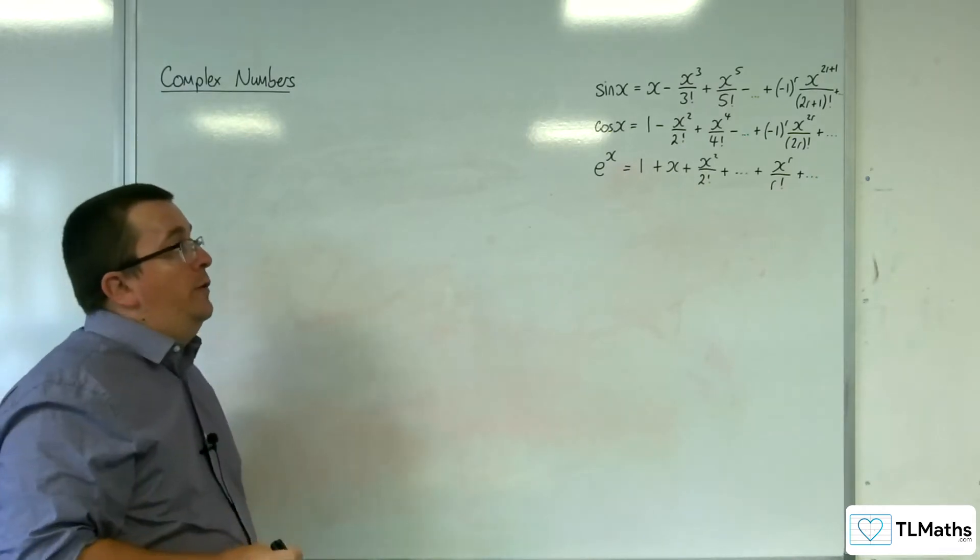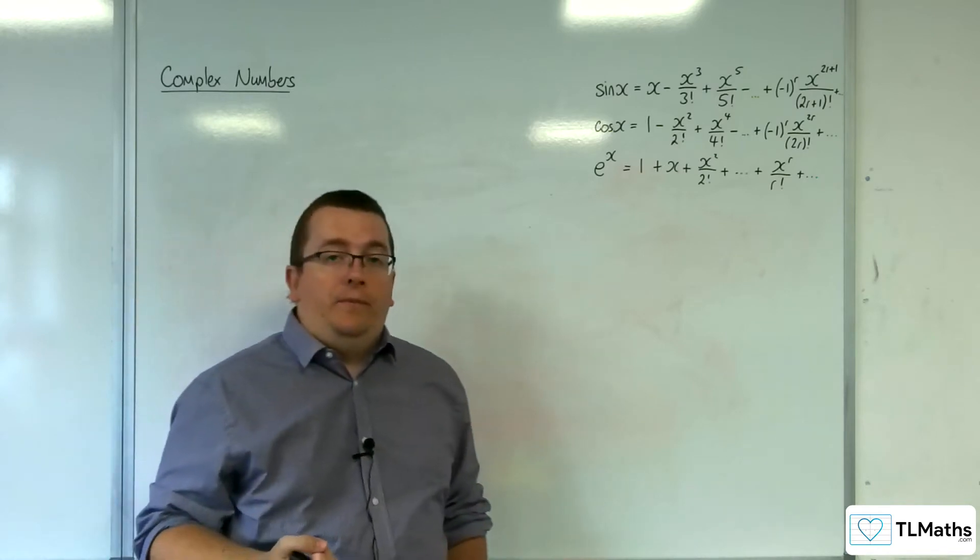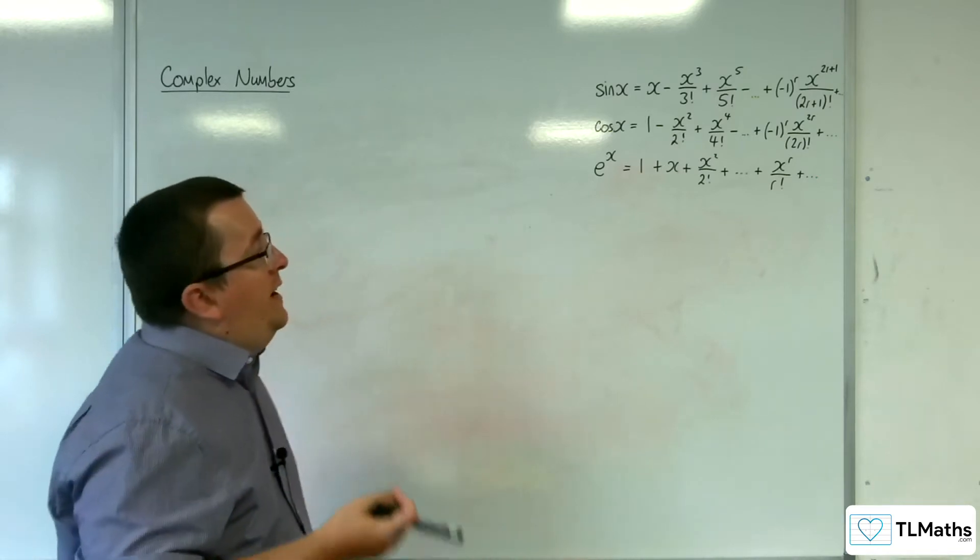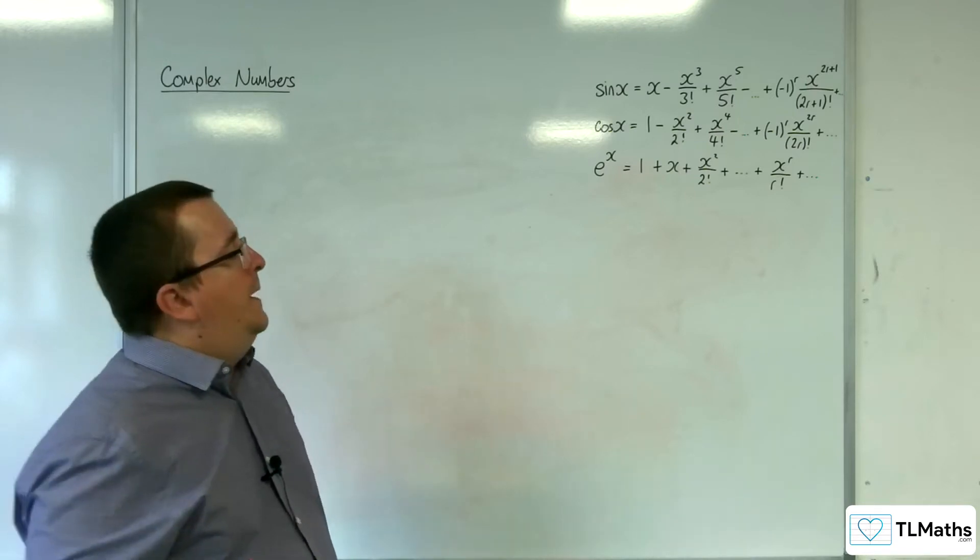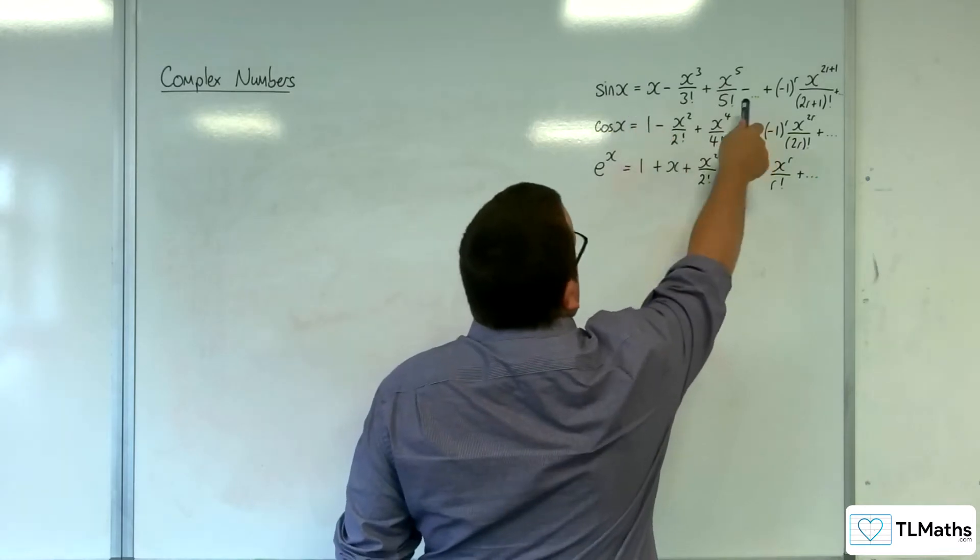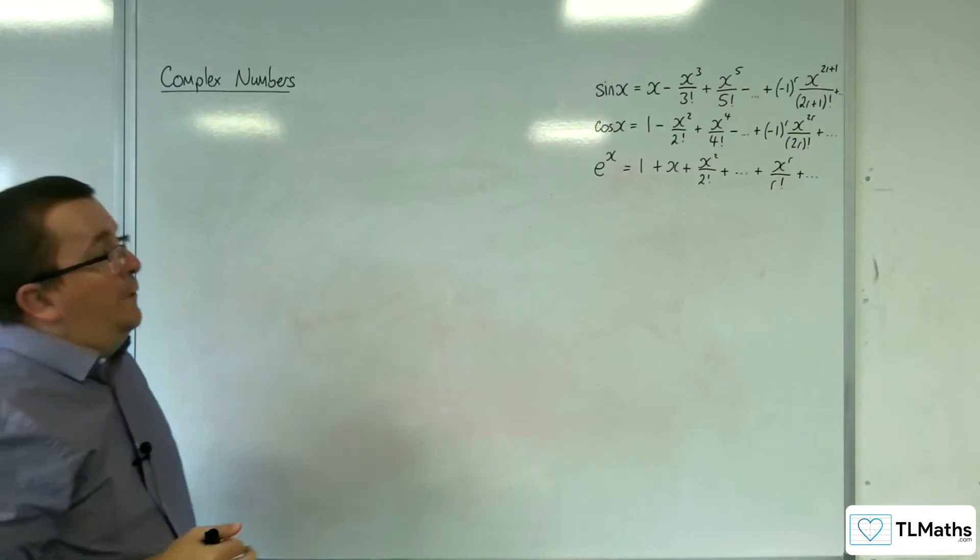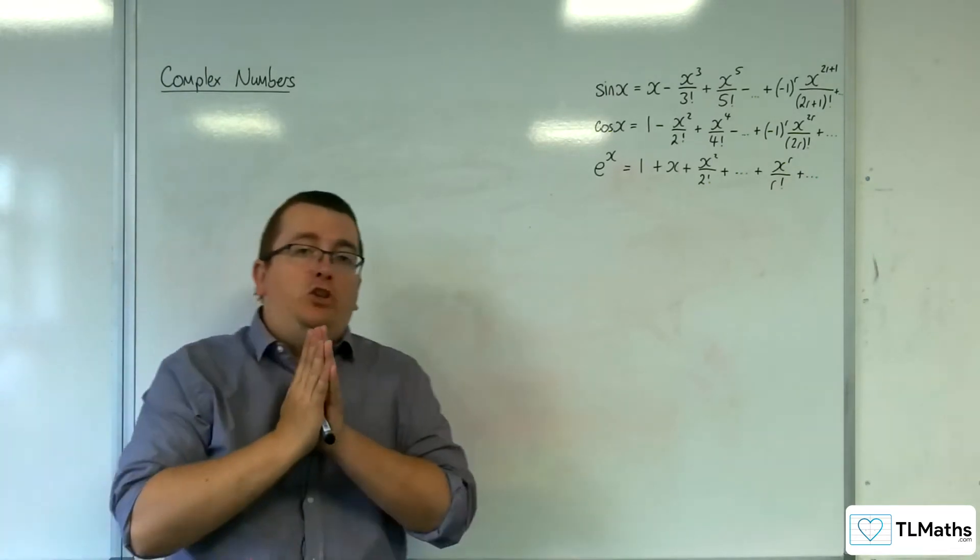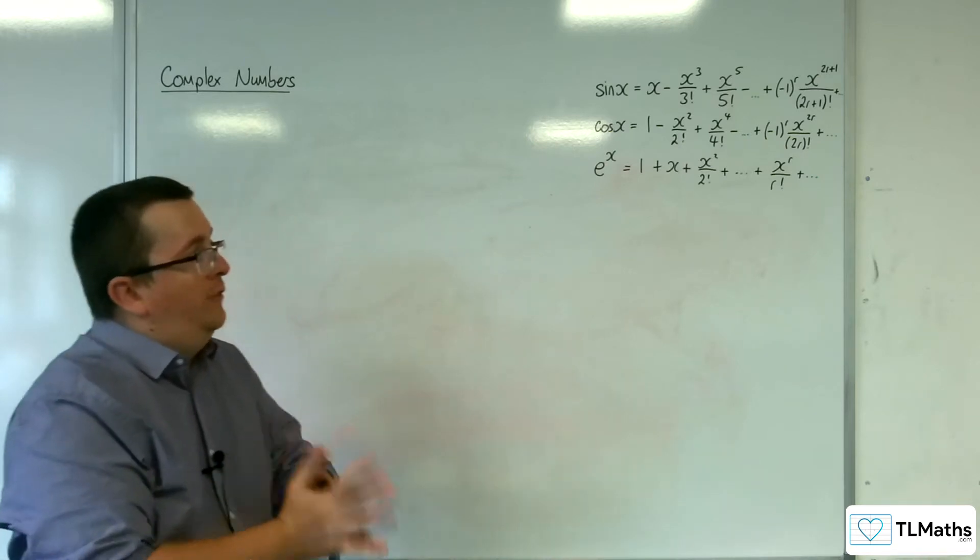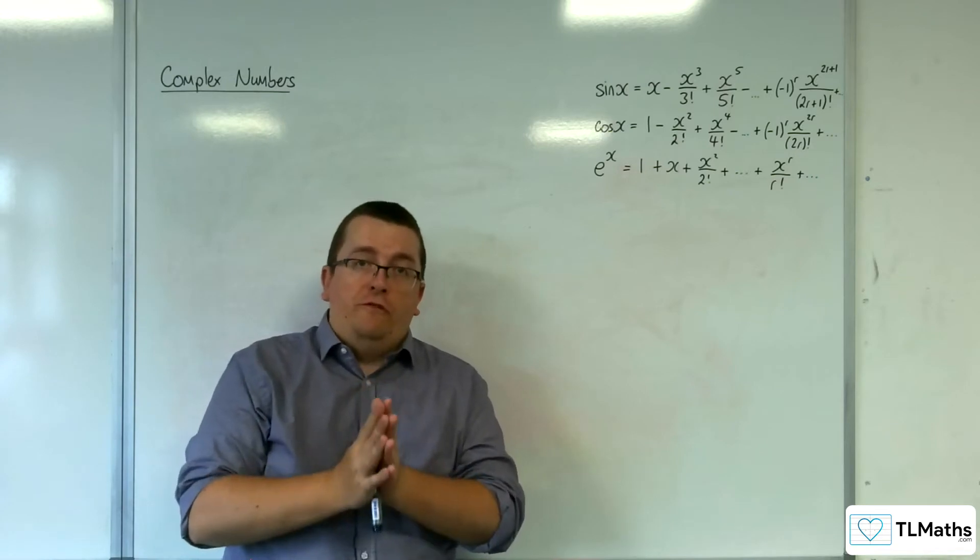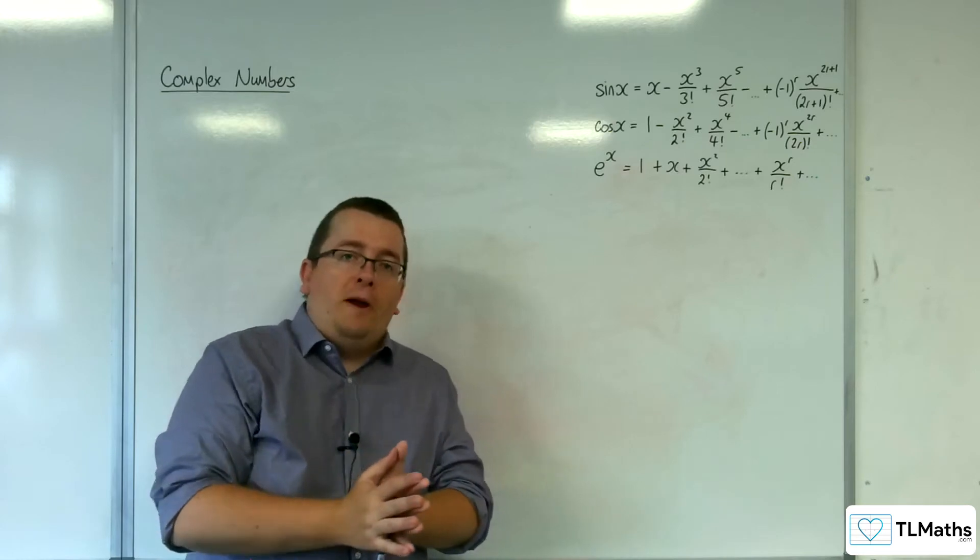So results from McLaren's series showed that you could write sine x, cosine x, and e to the x, among others, as an infinite series, infinite polynomial series. So we've got the expressions for sine x, cosine x, and e to the x up here as an aid. Now, these can also be shown to be true for complex numbers as well, for x being a complex number. I'm not going to go into any kind of proof of that, but if you are interested, that's a Google search away.